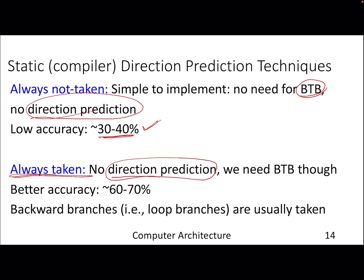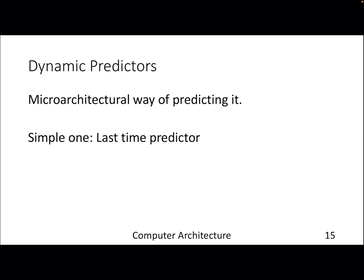If we use an always-taken predictor, the direction predictor structure is no longer needed — we always predict taken. However, since we always predict taken, we do need a BTB to supply the target address. This gives better accuracy, around 60–70%, and works well for loop branches, also known as backward branches, because most of the time those branches are taken. In a large for-loop, apart from the very last iteration, the branch is taken.